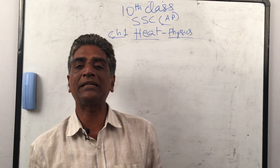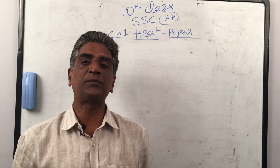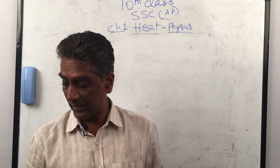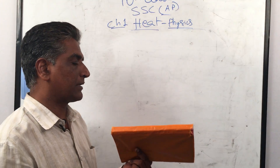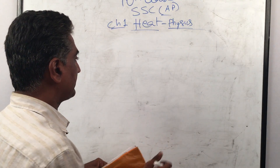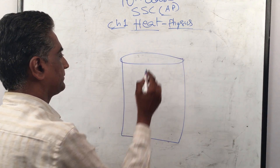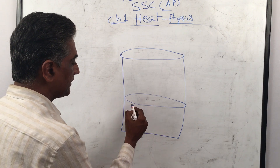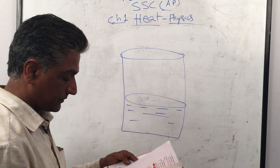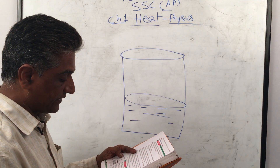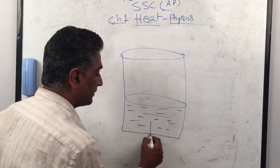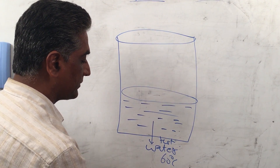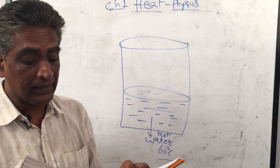Now we'll do activity four from page number four in this wonderful textbook, 'Physics Through Activities: Physics Made Simple.' Take water in a container — I'll make a diagram. Take water in a container and heat it to 60 degrees centigrade. So this is hot water, heated to 60 degrees centigrade.